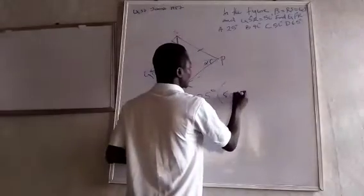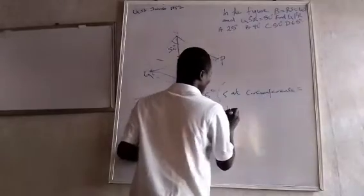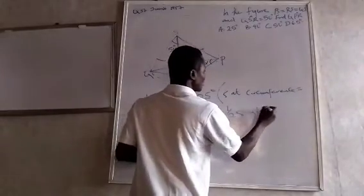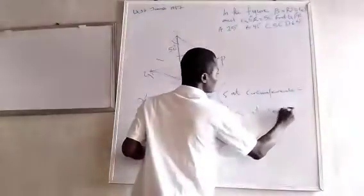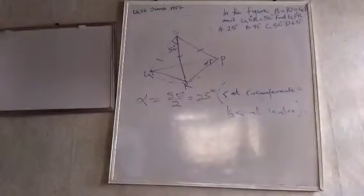Angle at circumference equals half angle at the center. Simple. That's the way to go about this. No hard calculation. Thank you.